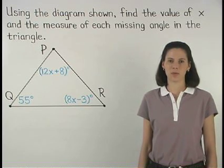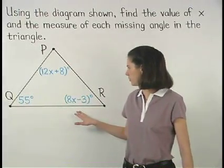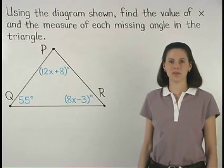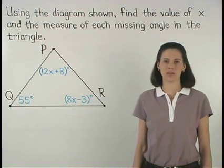In this problem, we're given a triangle and information about each of its angles, and we're asked to find the value of x and the measure of each missing angle in the triangle.